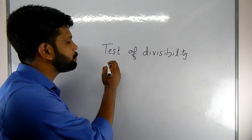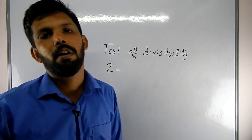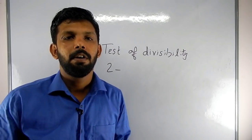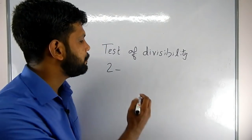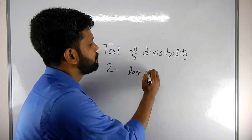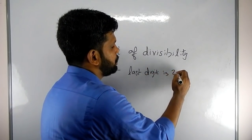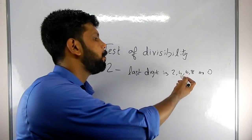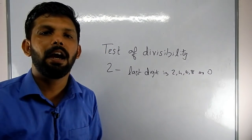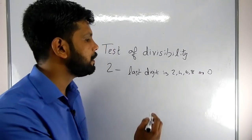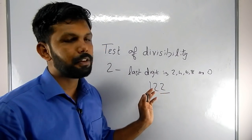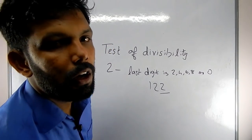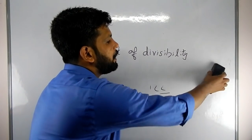Divisibility rule of 2: if the last digit of a number is 2, 4, 6, 8, or 0, then the number is divisible by 2. For example, we have the number 32 — the last digit is 2, so 32 is divisible by 2. That is the divisibility rule of 2.